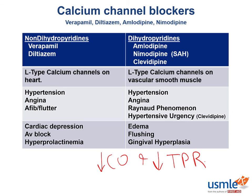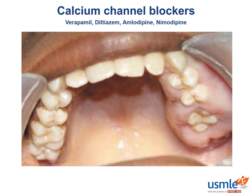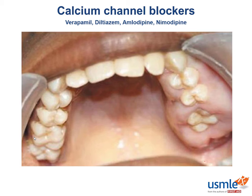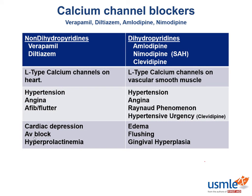A unique adverse effect that isn't completely understood is gingival hyperplasia. The last adverse reaction is high yield because it lets the test question writers bring in some endocrinology. Hyperprolactinemia classically occurs due to verapamil. The arcuate nucleus in the hypothalamus has neuroendocrine neurons that produce dopamine and package it into vesicles. The release of dopamine from the vesicles is dependent on calcium influx. Verapamil inhibits this calcium influx, so there is not enough dopamine to bind and inhibit the lactotrophs of the anterior pituitary, leading to hyperprolactinemia.